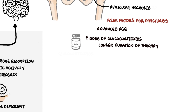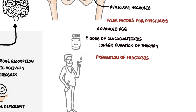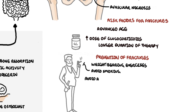Knowing the risk of fractures and osteoporosis associated with glucocorticoids, it is important to prevent fractures. Anyone on steroids should do weight-bearing exercises to prevent both bone loss and muscle atrophy. Patients should avoid smoking and excessive alcohol intake, and should take measures to prevent falls by using a walking stick or walking frame.